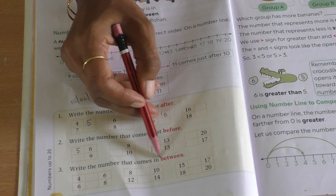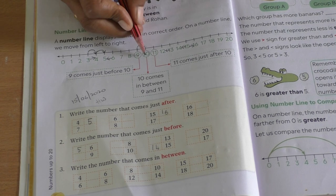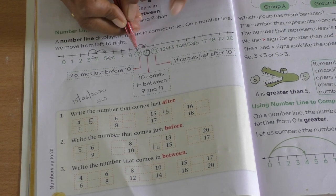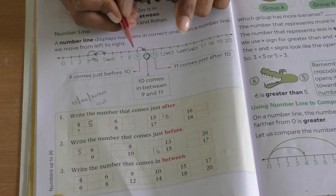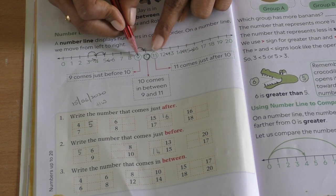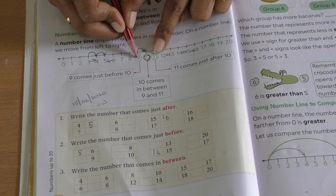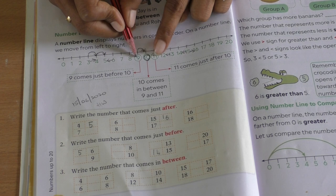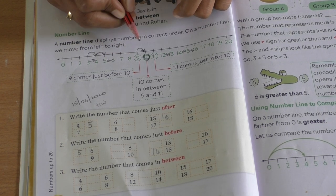Now coming to between numbers. Between number is a number which comes between the given two numbers. The example here they have given is 9 and 11. The number in between is 10.